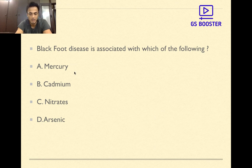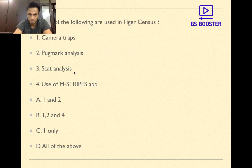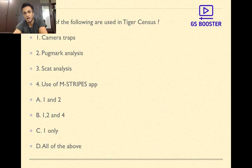Now the next question is: Which of the following are used in tiger census? Camera traps, pug mark analysis, scat analysis, use of M-stripes application. The answer here is D, all of the above. Camera traps,